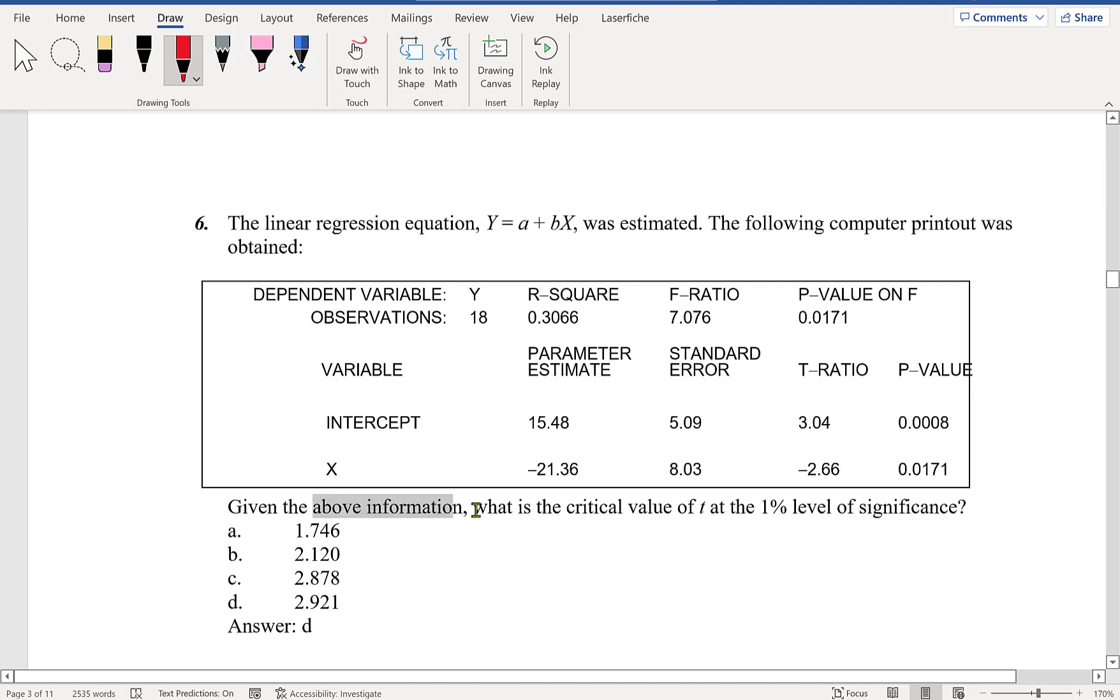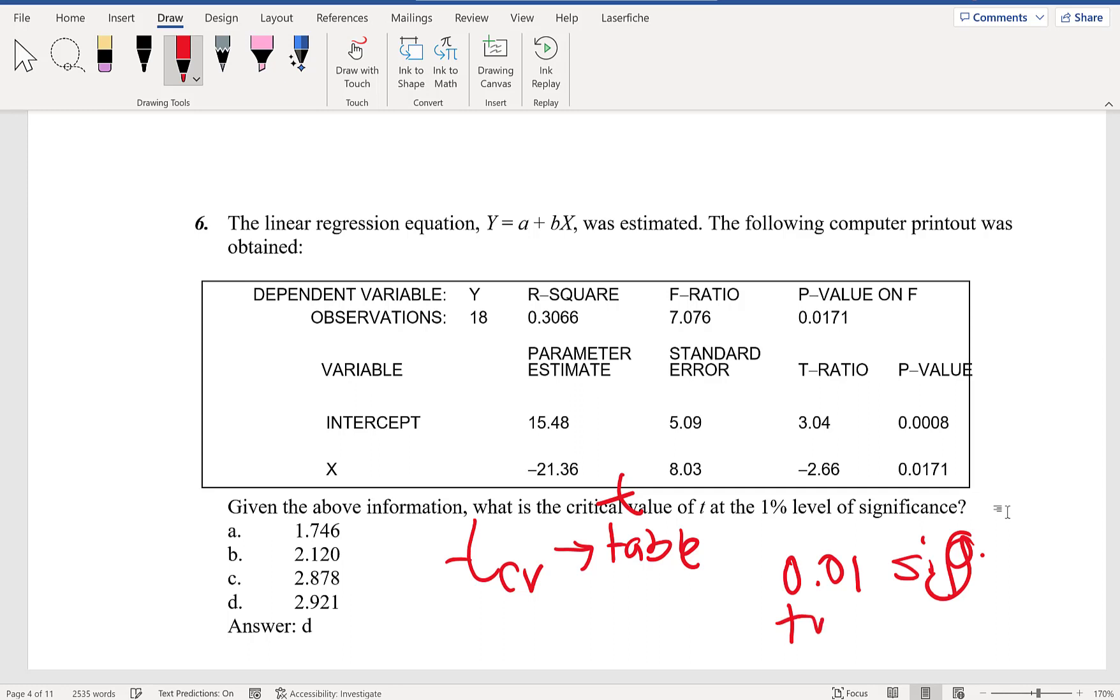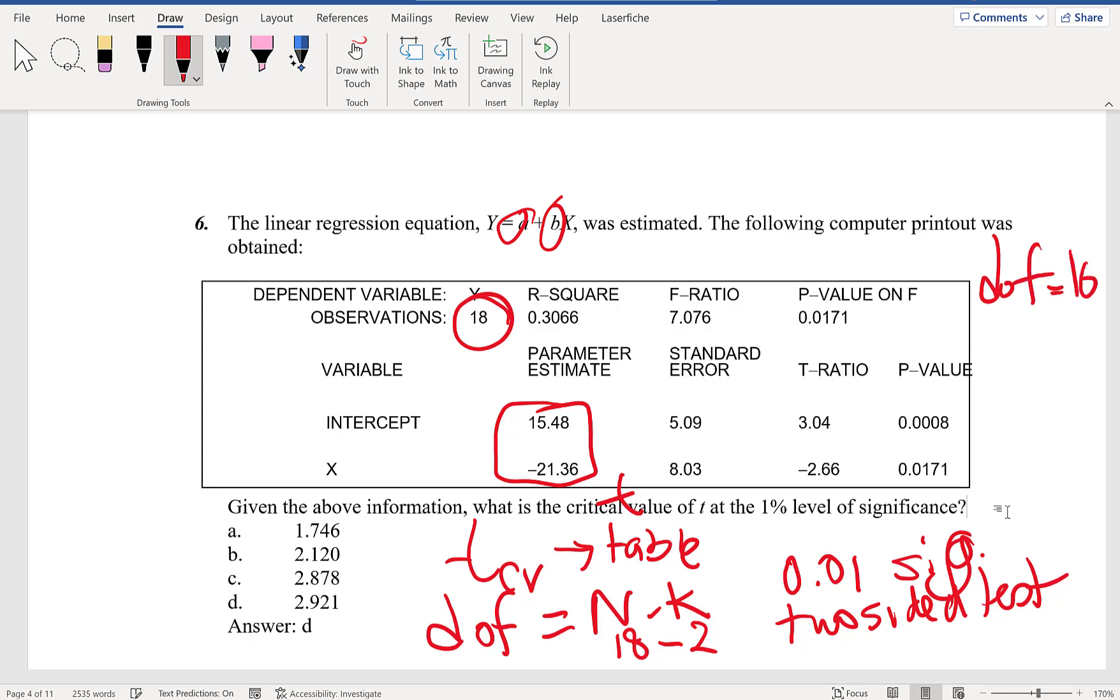Let's go over question 6. Given the above information, the critical value of T at 1% level of significance. We need a T table for this. We're looking at 0.01 level of significance for a two-sided test. What's the degrees of freedom? Degrees of freedom is n minus k. n is 18 observations minus k, the number of parameters to be estimated (a and b), which is 2. So we're looking at 16 degrees of freedom, two-sided, at 1% level.